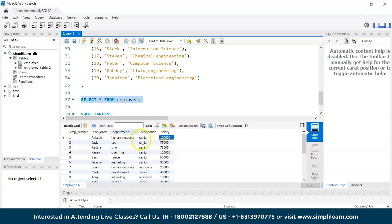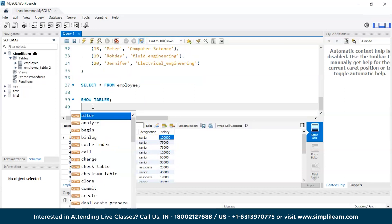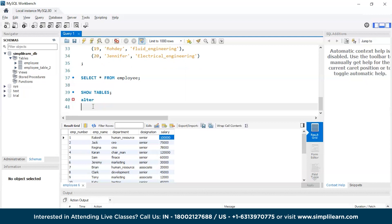Since our expectation is to find the second highest salary, let's try to write the following code: SELECT * FROM employee GROUP BY salary ORDER BY salary.